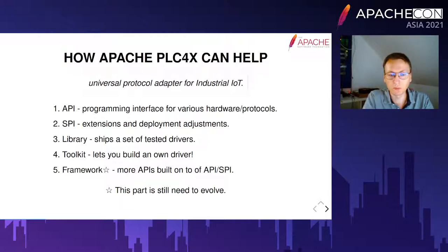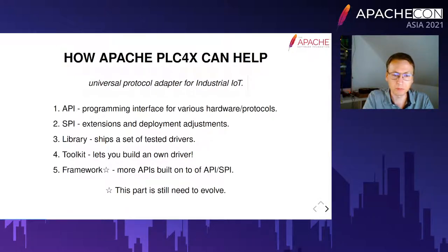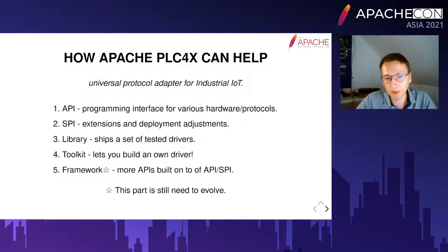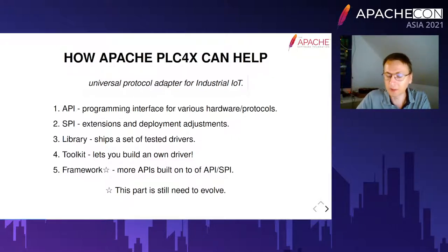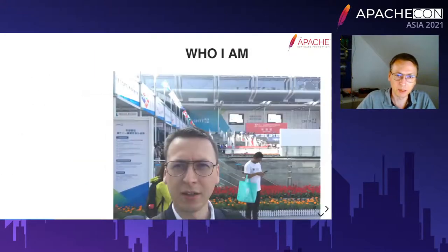The third point is really about the library part of Apache PLC4X, because it ships a set of tested drivers used by several entities. These cover Modbus, Siemens S7, Beckhoff ADS, EtherNet/IP, as well as CANopen. There is also OPC UA support which is currently receiving very big updates. The fourth point is the toolkit nature of PLC4X, which allows you to build your own driver if something is not supported. The fifth point, still forming, is a framework: PLC4X APIs can be used to build rich applications which not only access industrial equipment but can discover it and configure themselves.